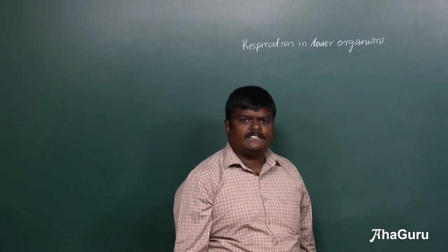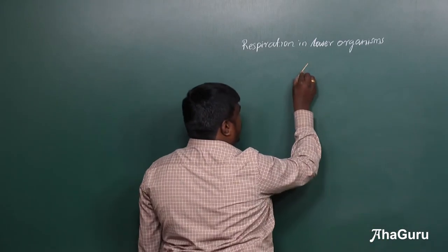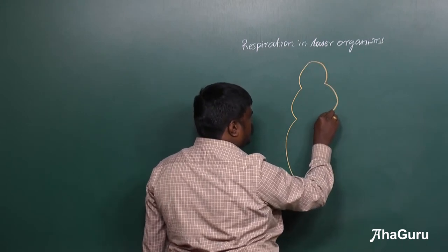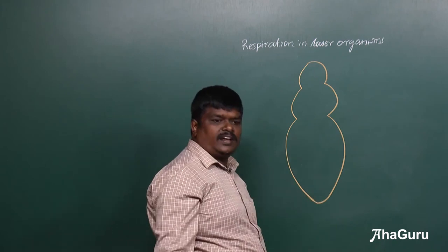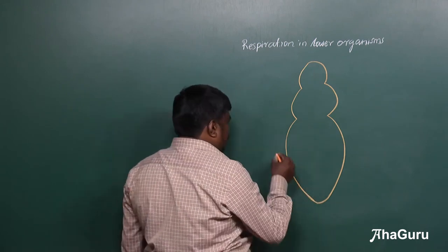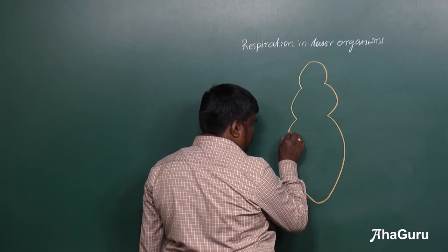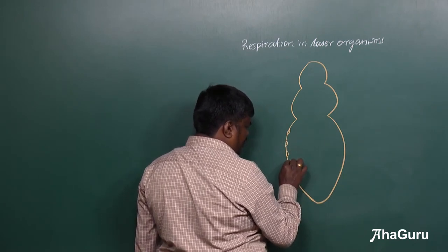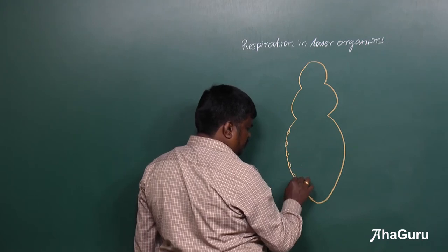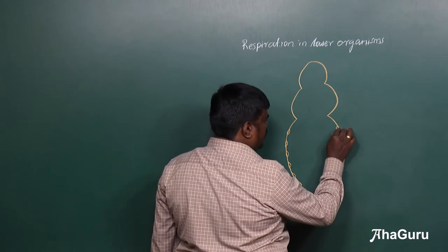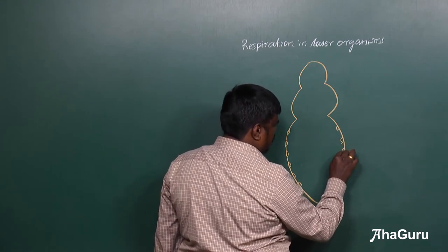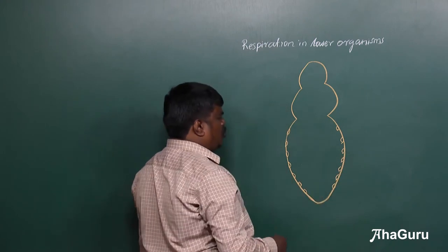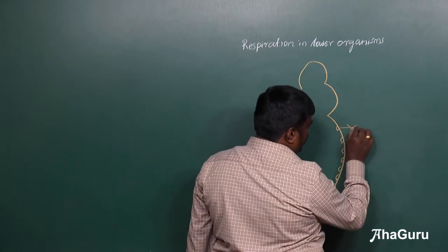In the case of insects, the body has three regions: head, thorax, and abdomen. In the thorax region and the abdominal region, on the sides of their body, they have some openings — about ten openings on the lateral sides. These openings in their body, we call them as spiracles.